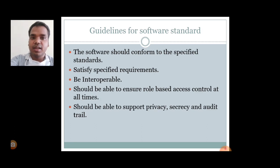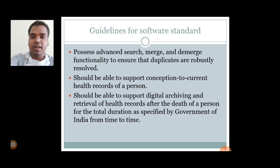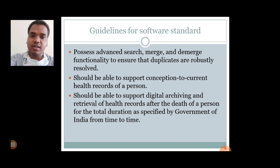Guidelines for software standard: the software should confirm to specified standards, satisfy specified requirements, and be interoperable. It should be able to ensure role-based access control at all times, and support privacy, secrecy, and audit trail. It should possess advanced search, merge, and demerge functionality. Should be able to support conception-to-current health record of a person, and support digital archiving and retrieval of health records after death of a person for the duration specified by the Government of India.